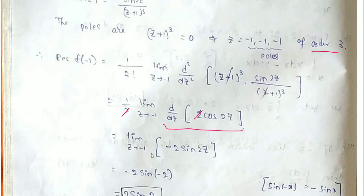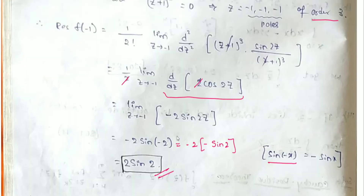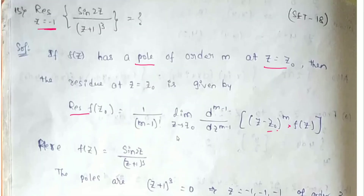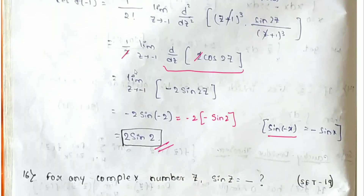Substituting z = minus 1, we get minus 2 into sin(minus 2). Since sin(minus x) = minus sin(x), this becomes minus 2 into minus sin(2), which gives plus 2 sin(2). So the final answer is 2 sin(2). This question from the 18th paper is solved by simply applying the residue formula.